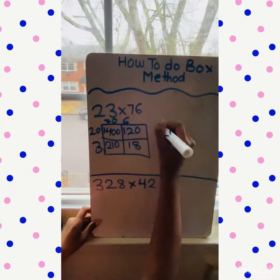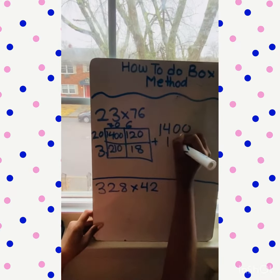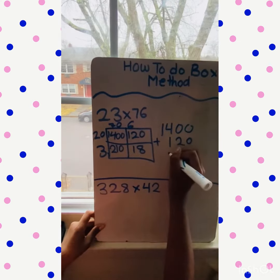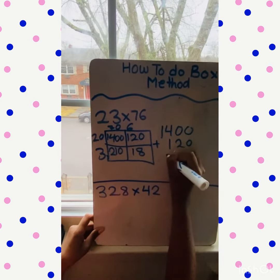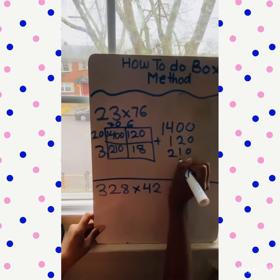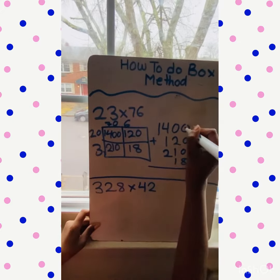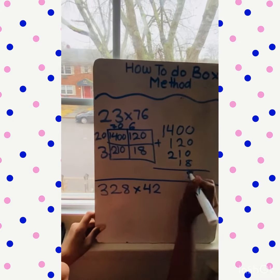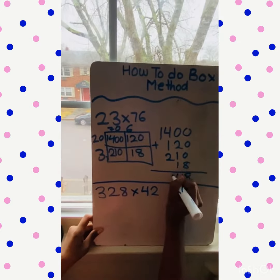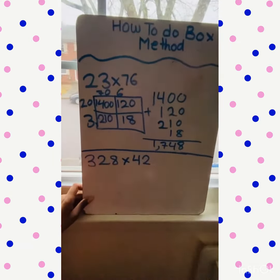Now I gotta add 1400 plus 120 plus 210 plus 18. So you add them all up... so this is the answer. Now we can do it with three digits and multiply it.